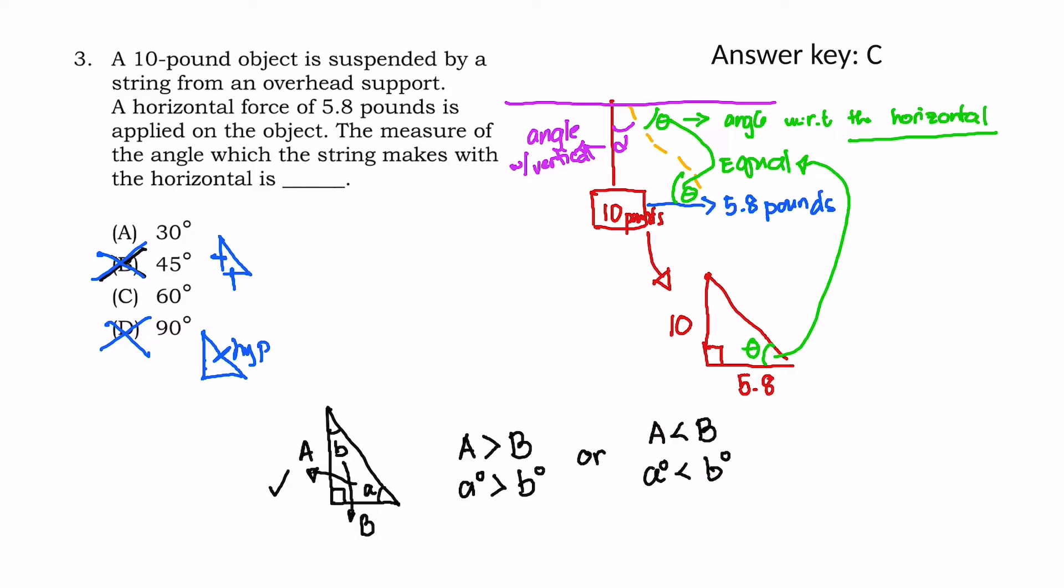So we are left with letter C and letter A. Now, the best answer here for theta will be the 60 degrees because 10 is longer. That means it should have a greater angle and that is theta should be equal to 60 degrees.